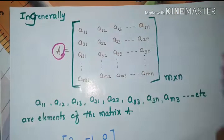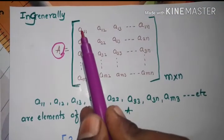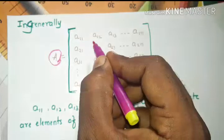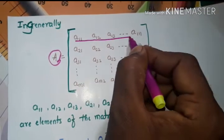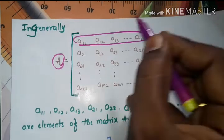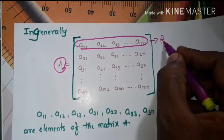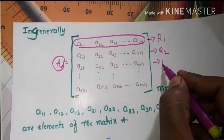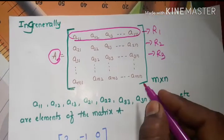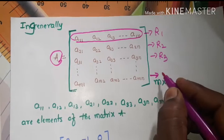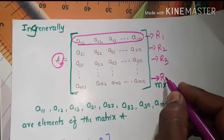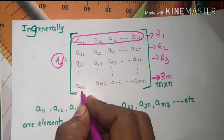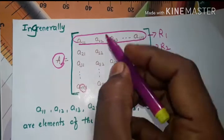My next question is: how many rows and columns are here? Which is the first row? That is R1. Which is R2? Which is R3? And which is Rm? The number of rows are m.